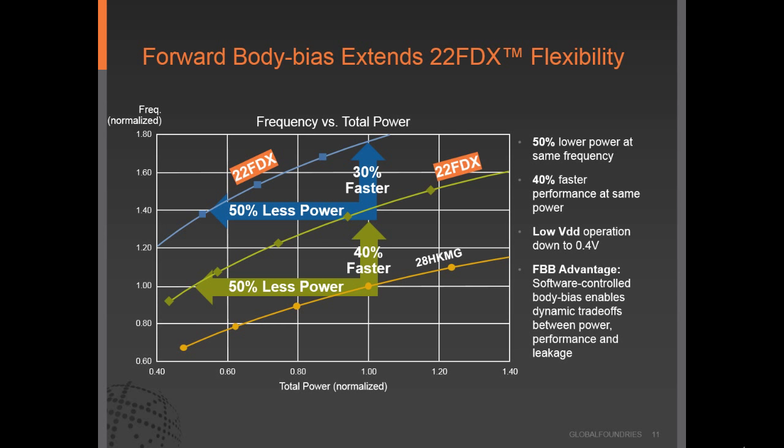Let's take a quick look at the performance benefits that the base platform of 22FDX provides compared to existing high-performance 28 high-K metal gate technologies today, and then look at the additional performance or power reduction gains from leveraging the forward body bias capabilities. Compared to a 28 nanometer high-K metal gate technology, 22FDX can provide up to 50% less power at ISO frequency and/or 40% faster performance at the same total power. As you go from the green curve to the blue curve — 22FDX further optimized with forward body bias — one can take that forward body bias knob to further reduce power or boost speed in a turbo or burst mode, enabling low VDD operation down to 0.4 volts.